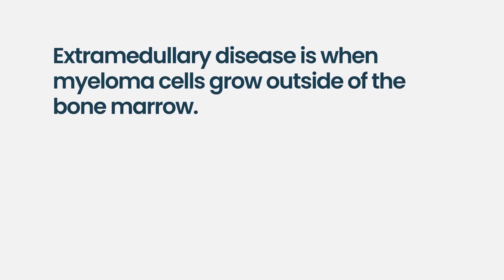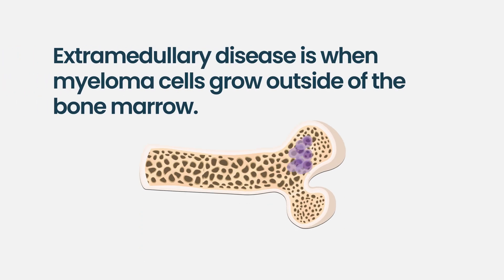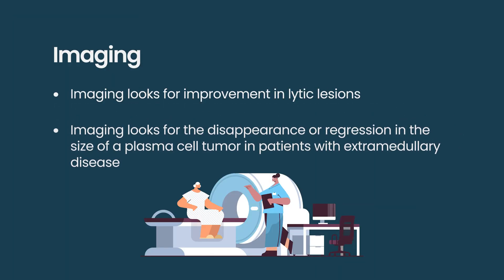If we're looking at patients who have extramedullary or paramedullary disease — referring to a plasma cell tumor called a plasmacytoma, which can grow proximal to the bone or in some cases far away from it — we look for disappearance of that or regression in the size of the plasmacytoma.